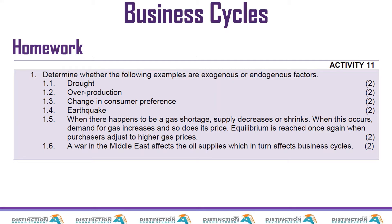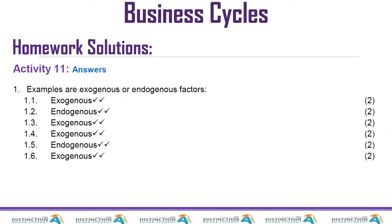The last question: a war in the Middle East affects oil supplies, which in turn affects business cycles. This is something happening from outside, so it is exogenous. So the answers are: exogenous, endogenous, exogenous, exogenous, endogenous, exogenous — you can go ahead and mark yourself.